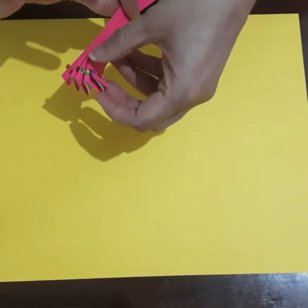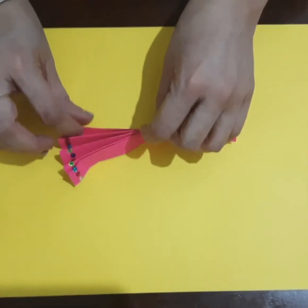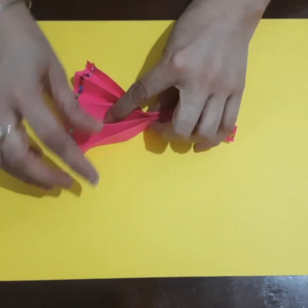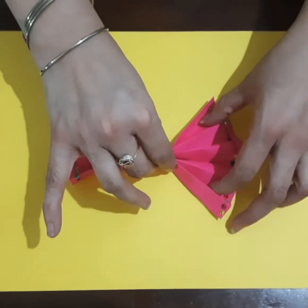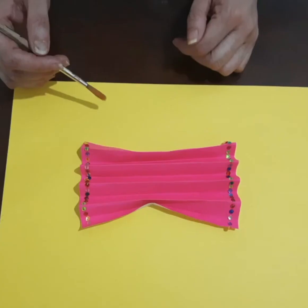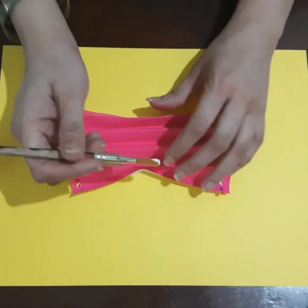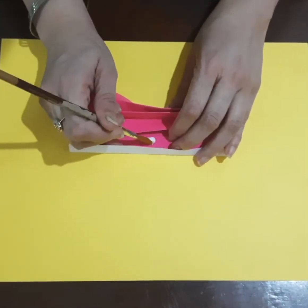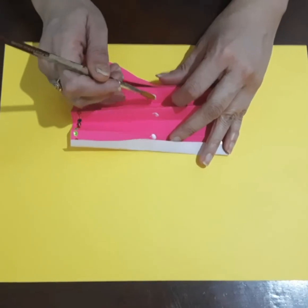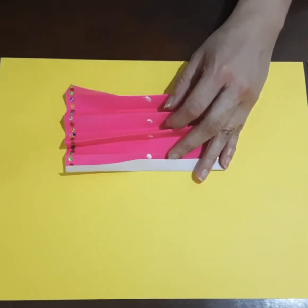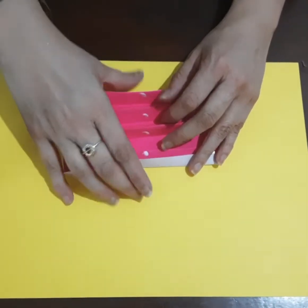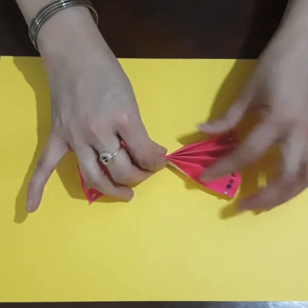Now after folding, we will take a little bit of glue and apply it in the middle of every crease. We will bring these wings together so that they stick.